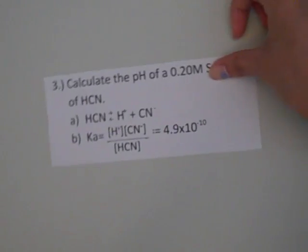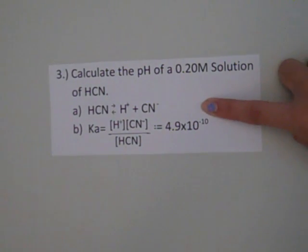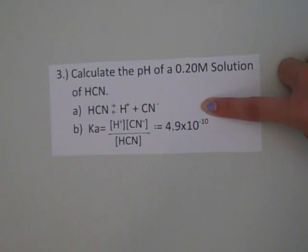For example, if we had to calculate the pH of a 0.20 molar solution of HCN, we would first write the reaction, which is HCN goes to hydrogen ions plus cyanide ions.